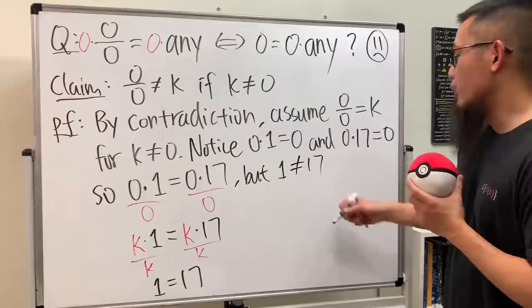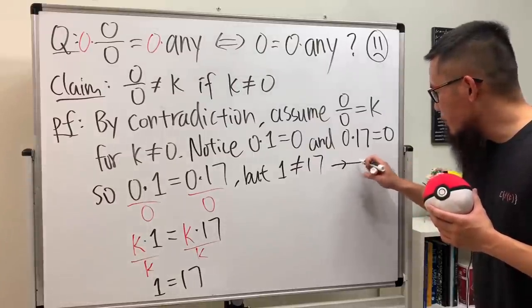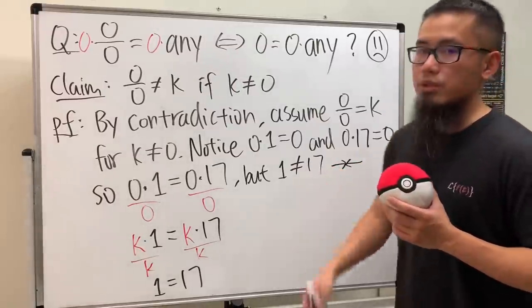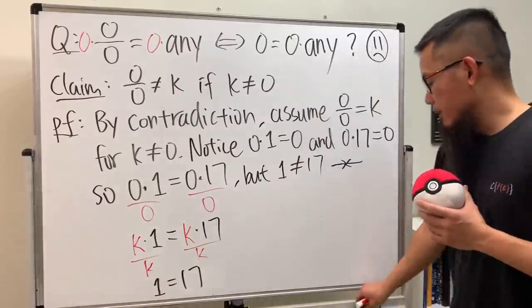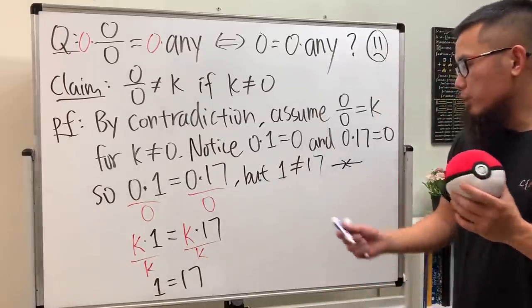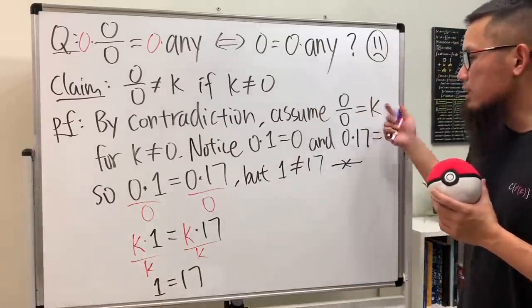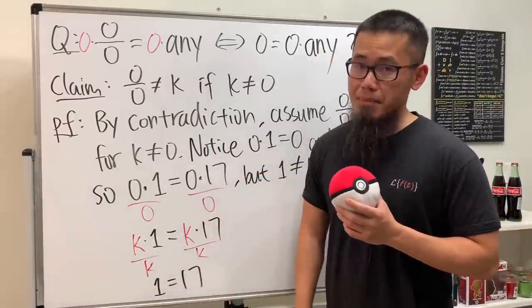Therefore this right here is the end of the proof because we end up with our contradiction. As you can see, if you really define zero over zero to be a non-zero number, this kind of thing will happen.